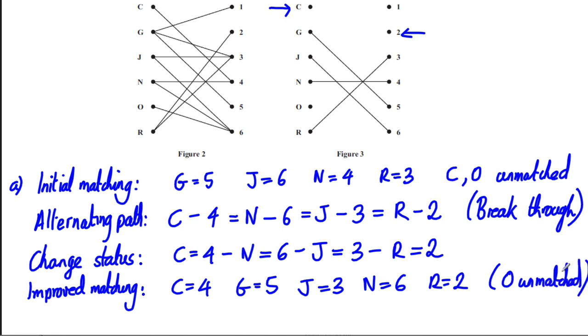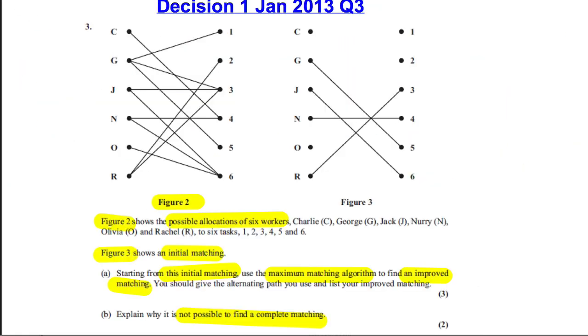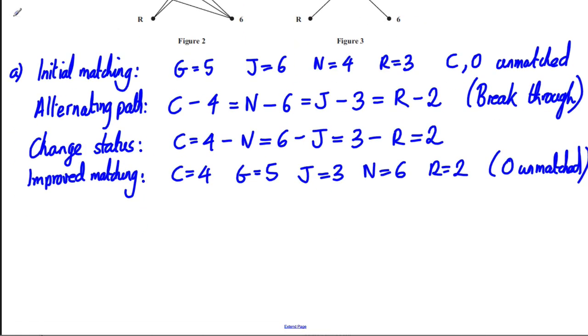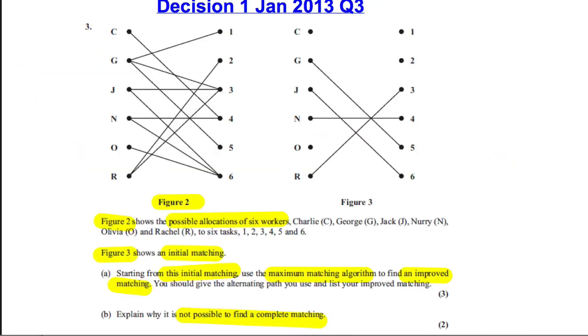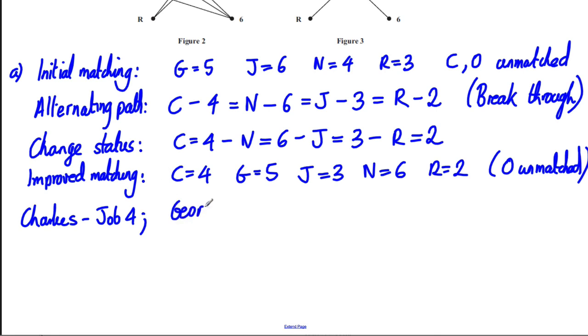And we're pretty much done. The only thing I'd like to do, really, just to ensure I get full mark, I'd like to put this back in context. So I should really write Charlie, job 4. And then I'd write George, job 5. And you know what I'm saying for me. Continue that. And I would write all those out just to ensure I've put the problem back in context. So we're done for part A.